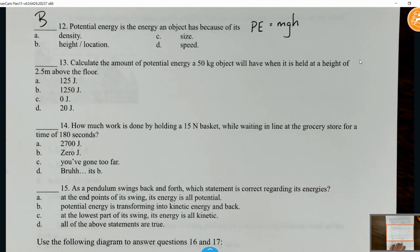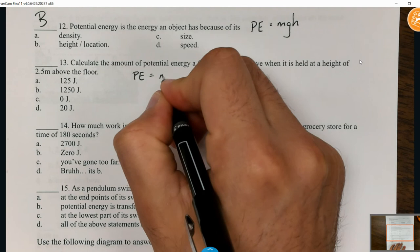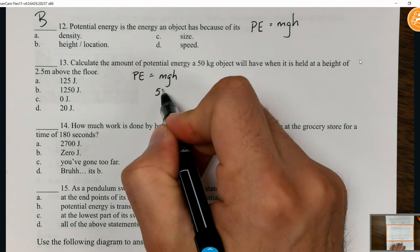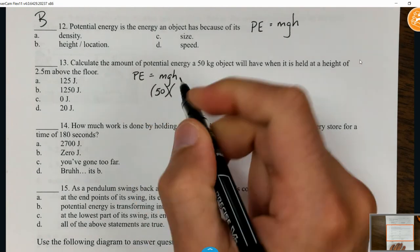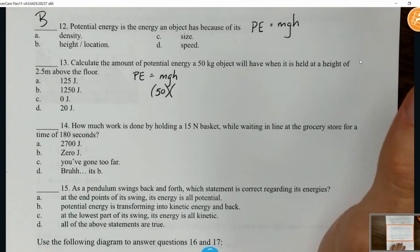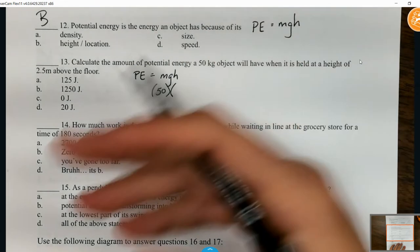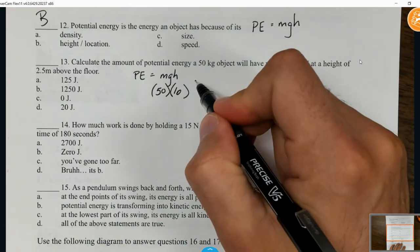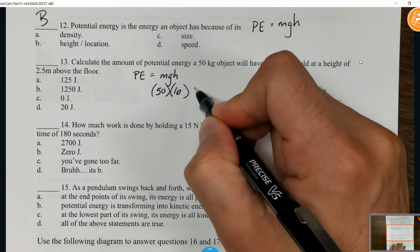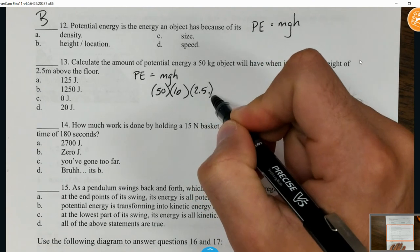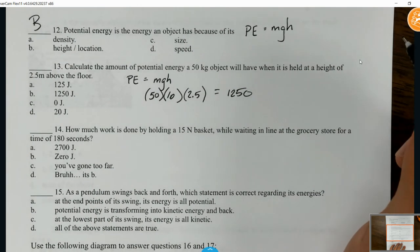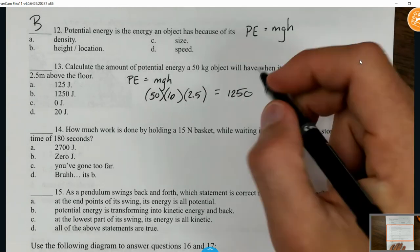Calculate the amount of potential energy a 50 kilogram object will have when it is held at a height of 2.5 meters above the floor. Potential energy is MGH. What is the mass? 50 kilograms. What is gravity on earth? The actual value is 9.8, but for simplicity we're just going to use 10. What is the height? 2.5. Multiplying all that together, you should get 1250. Energy is measured in the same unit as work - joules.